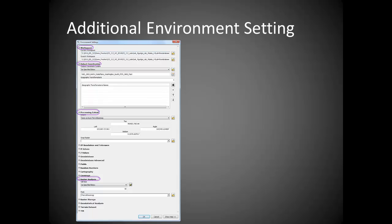The additional environment settings — there could be two. One is the processing extent, where you set it to the same as the Pierce base map layer. Another, which is new, is raster analysis: setting the cell size and then stating that the mask is the Pierce base map.